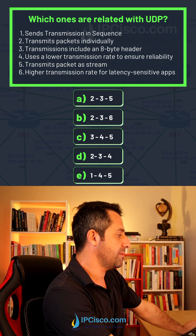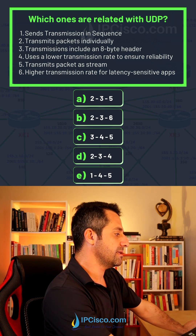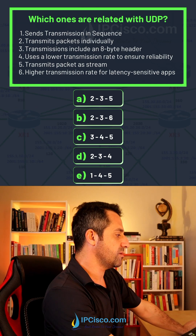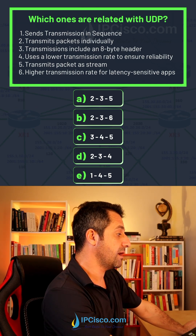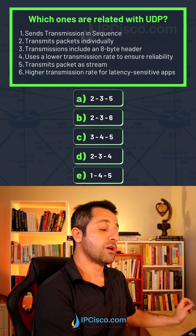Transmission includes an 8-byte header — yes, UDP header is 8 bytes. Uses lower transmission rate to ensure reliability — not true. Transmits packets at stream — not true. Higher transmission rates for latency-sensitive applications — yes, this is also true.